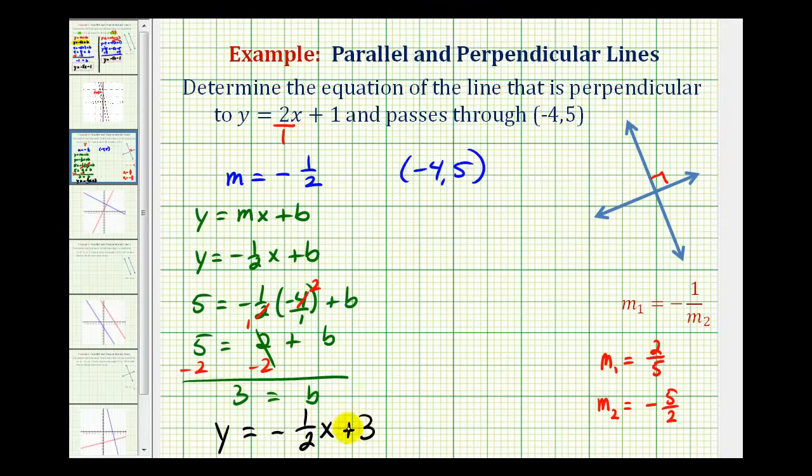Now let's see if we can get the same equation using point slope form. Point slope form of a line is y minus y1 equals m times the quantity x minus x sub 1, where m is the slope,